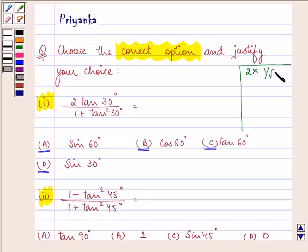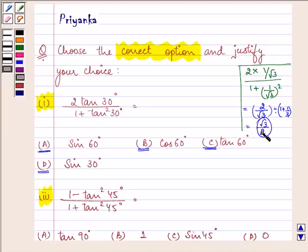So 2 into 1 by root 3 upon 1 plus 1 by root 3 the whole square. So here after doing the calculation it will be 2 by root 3 getting divided by 1 plus 1 by 3 and which is equal to root 3 by 2.